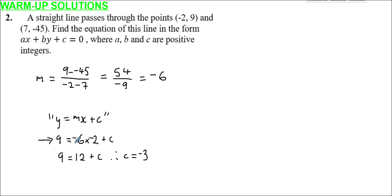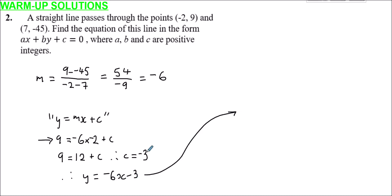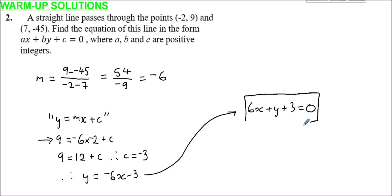So in the form y = mx + c we have y = −6x − 3. But we need a, b, c to be positive integers. Adding 6x and 3 to both sides gives 6x + y + 3 = 0, and that's our final answer for question two.